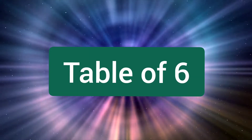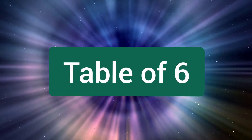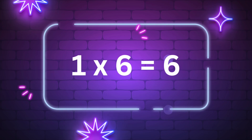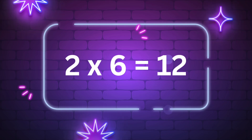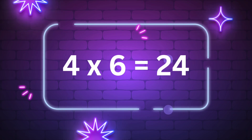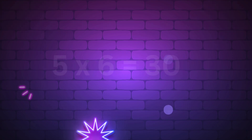Table of six. One times six is six. Two times six is twelve. Three times six is eighteen. Four times six is twenty-four. Five times six is thirty.